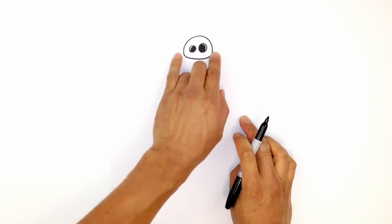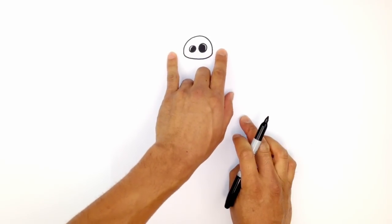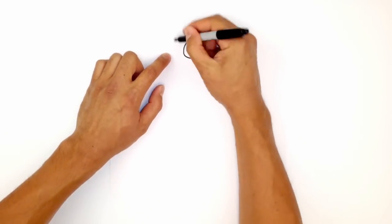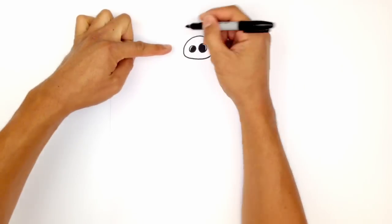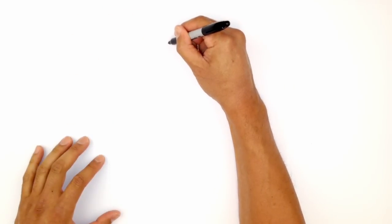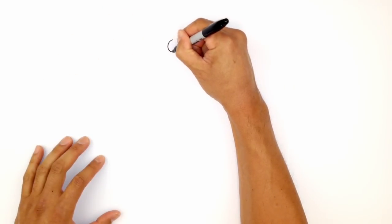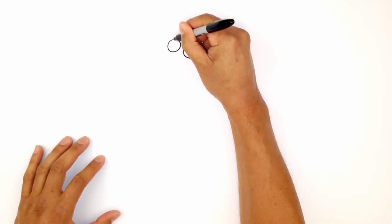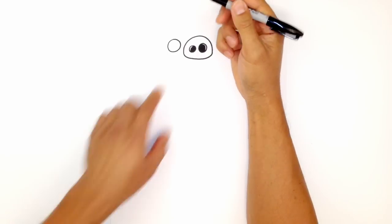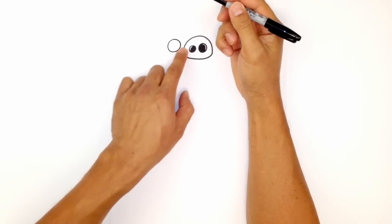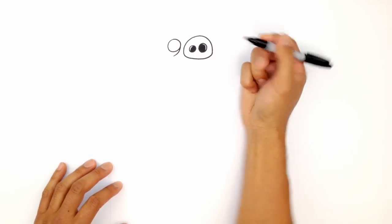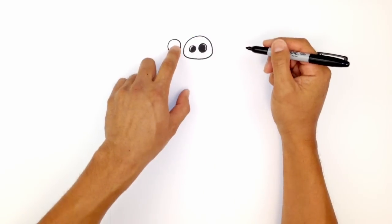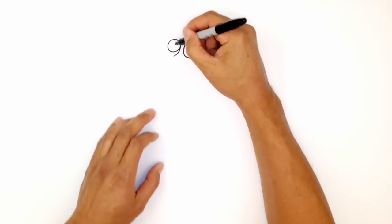Now I'm going to move over to the side of the nostrils and draw in the eyes. I'm going to draw a big circle just in line with the nose, starting from the top and drawing a circle. Then along the bottom edge, I'm just going to draw an eye bag, curving out.